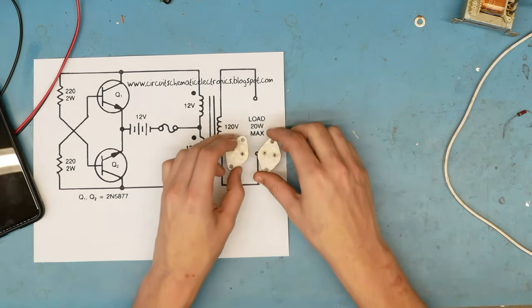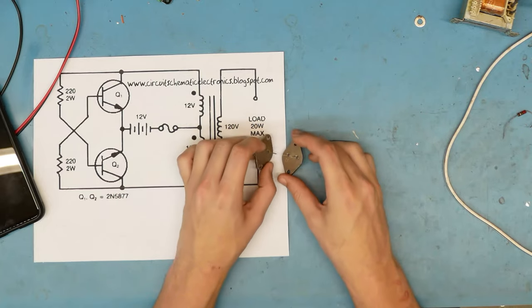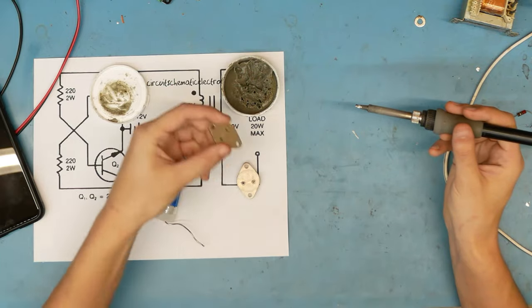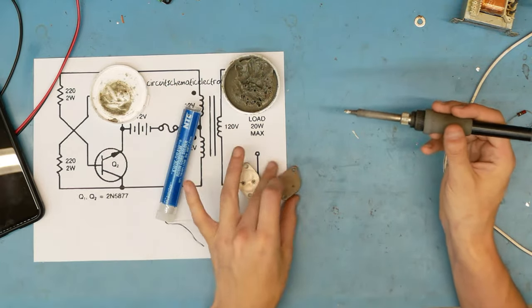It does do a good job of dissipating heat if you bolt it to a big hunk of metal. I should probably mount these to a heat sink, but for now, I'm just going to do this kind of open air. Dip these transistors in the flux, get the pins tinned up.